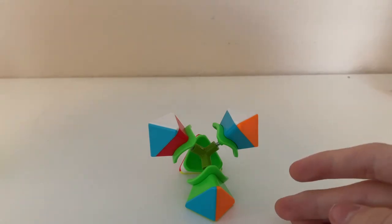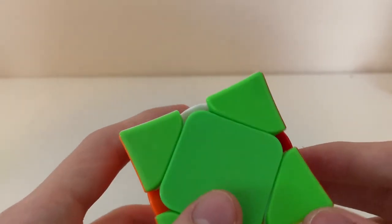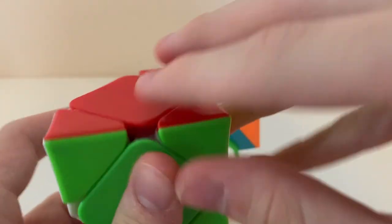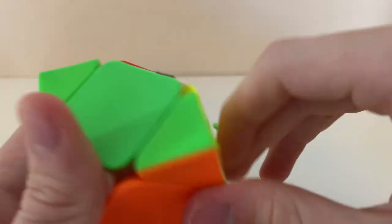So why doesn't the core have eight tips, like the eight corners of a skewb? Well, only half of the corners are actually part of the core, and the other half, which are diagonal to each other, are just decorative corners.